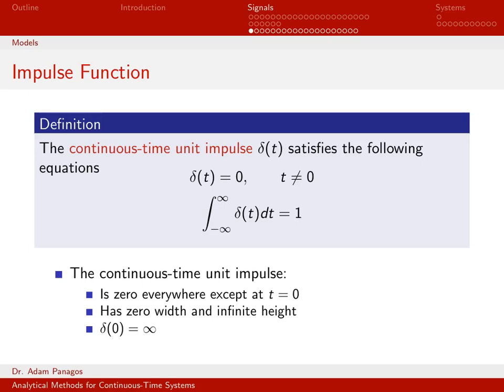The first one is what we call the continuous time unit impulse. This is a specific signal that we denote by delta of t. Delta of t means something very specific in this class — it means a signal that satisfies these criteria. First of all, it's equal to zero everywhere except at time zero. At time zero, it's actually infinitely tall and infinitely thin, so it has the property that if you integrate across it, you actually get out one.